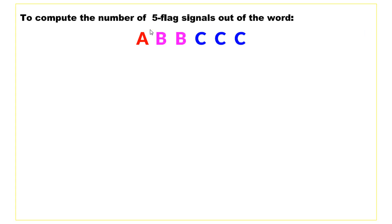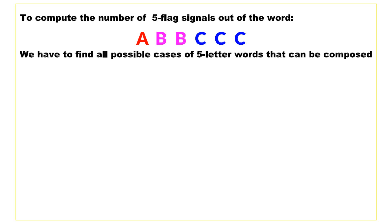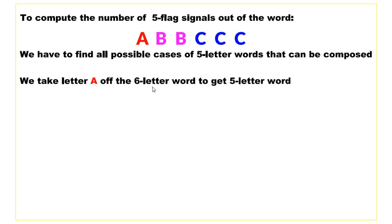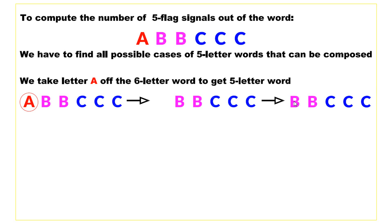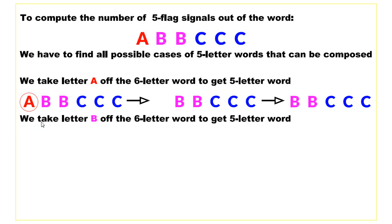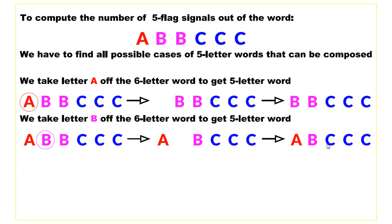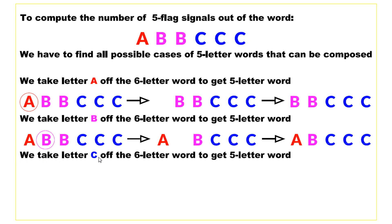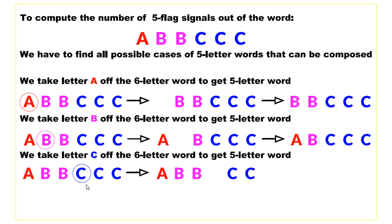To compute the number of five-flag signals, we take five flags out of the six-flag sequence. We can remove letter A to get the five-flag sequence B, B, C, C, C. We can remove one B to get A, B, C, C, C. And we can remove one C to get A, B, B, C, C. This gives us three possible five-flag sequences.